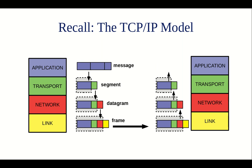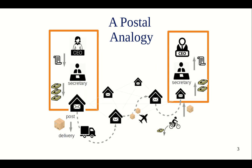Recall the analogy we used to describe this four-layer model. Imagine the CEO of company A wants to send some data — a big message — to the CEO of another company B. Assume that this message is very big and consists of maybe some files, lots of papers. The CEO hands this message down to the secretary and conveys that they want it delivered to the CEO of company B.